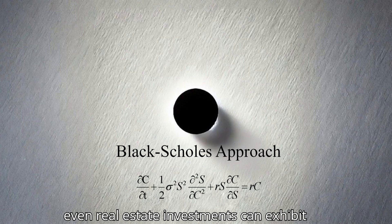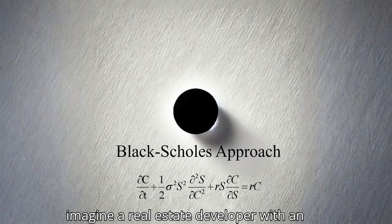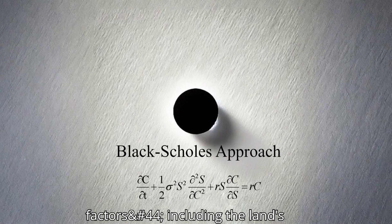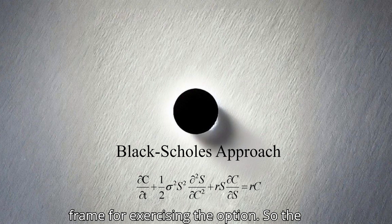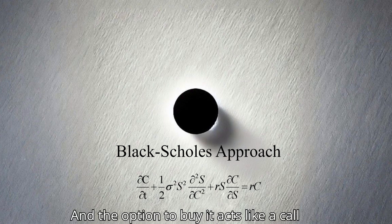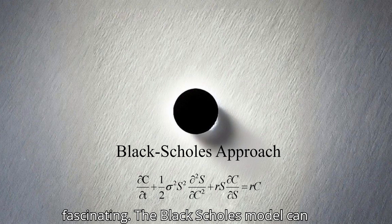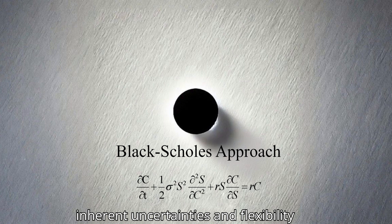You mentioned earlier that even real estate investments can exhibit option-like characteristics. Can you elaborate on that? Certainly. Imagine a real estate developer with an option to purchase a piece of land. The value of that option hinges on various factors, including the land's potential future value if developed, the cost of development, and the time frame for exercising the option. So the land itself becomes the underlying asset, and the option to buy it acts like a call option in the stock market. Precisely. The Black-Scholes model can help evaluate the worth of such a land purchase option, considering the inherent uncertainties and flexibility involved in real estate development.